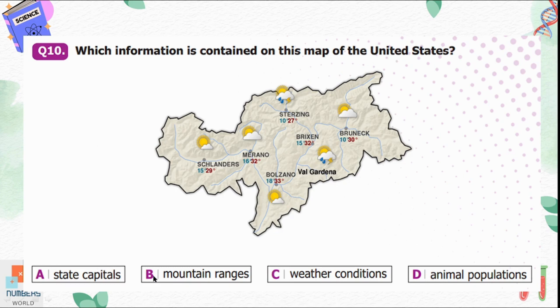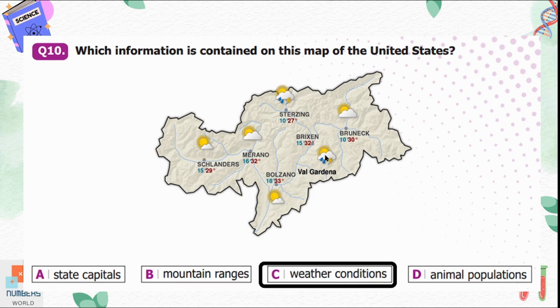Question number ten: which information is contained on this map of the United States? Option A, state capitals; B, mountain ranges; C, weather conditions; D, animal populations. We can see sun, clouds, rain, and thunderstorm symbols on the map, so this map is about weather conditions of the United States. Option C is correct.